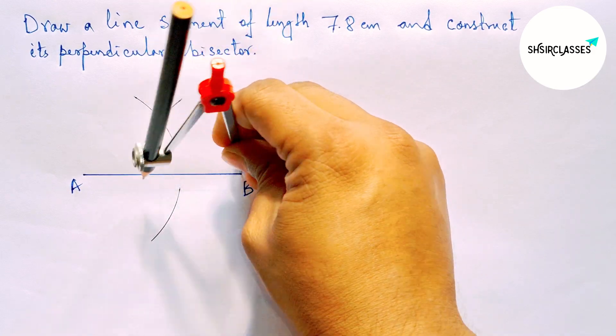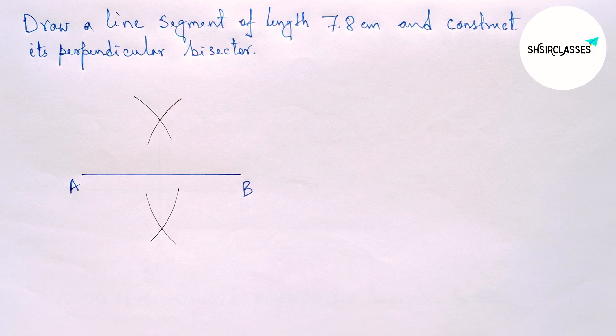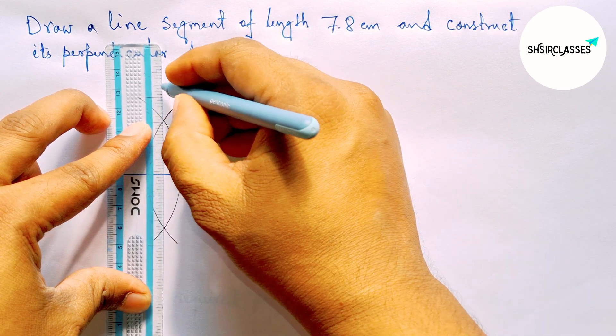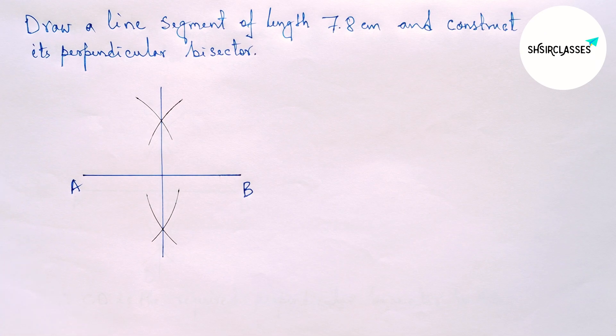Okay, now joining this and this is the required perpendicular bisector to the line AB.